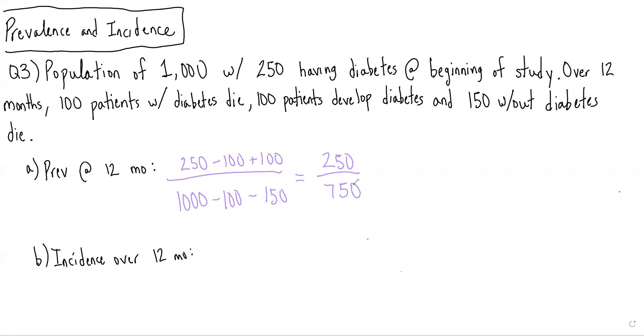This is the number of patients with diabetes over the total number of patients in the population at one period in time. We're then asked to calculate the incidence over the first 12 months. Remember, the incidence is the number of new cases among patients at risk.